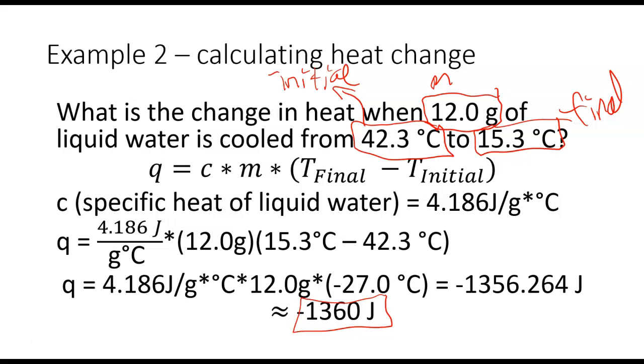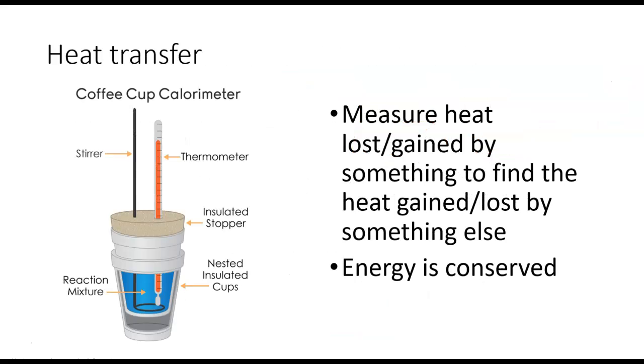You'll also be measuring the heat for using heat transfer. So you'll look at a coffee cup calorimeter and using this to measure the heat loss or gained by something. The reason this is going to work is we're going to off this concept, which is that energy is conserved. That means that if something is giving off heat, something else has to absorb it. Heat can't just disappear. It has to go somewhere.